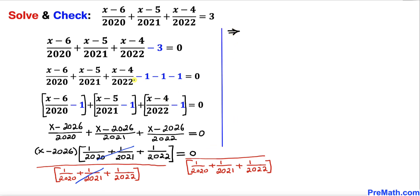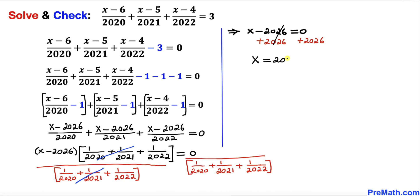So we end up with x minus 2026 equals 0. Adding 2026 to both sides, this term is gone, and our value of x turns out to be simply 2026. That is our solution.